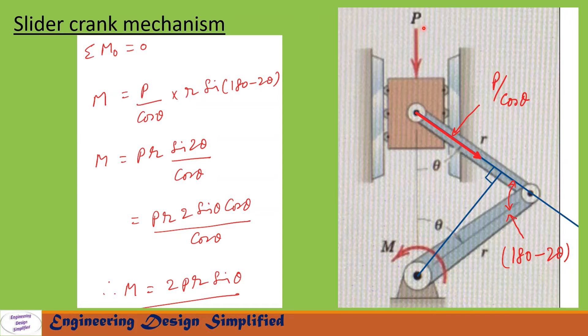The component of P along this coupler link will become P by cos theta from this triangle here. This length is r, this length is r, this length is r, this angle is theta, this angle is theta.